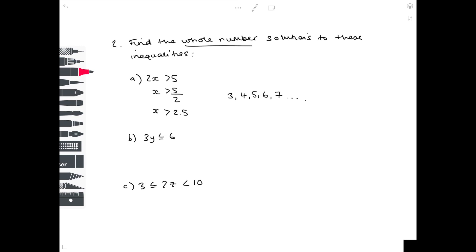Looking at part b, 3y is less than or equal to 6. So solve for y by dividing 6 by 3 to get 2. So y has to be smaller or equal to 2. And again, we're looking for whole numbers, so that would be 2, 1, 0, minus 1, minus 2, etc.